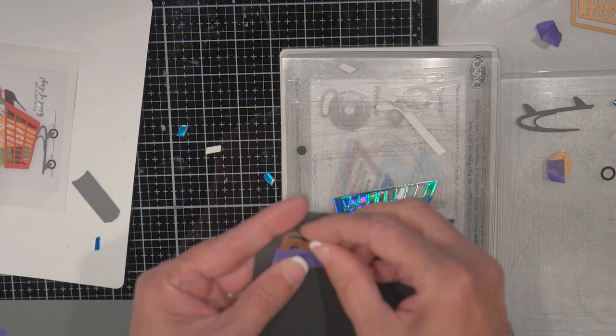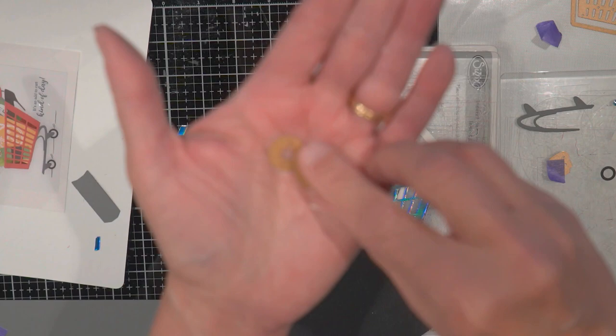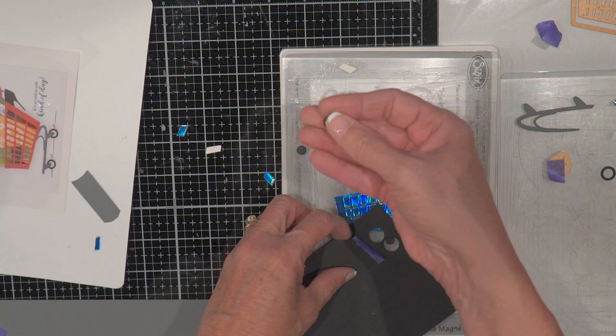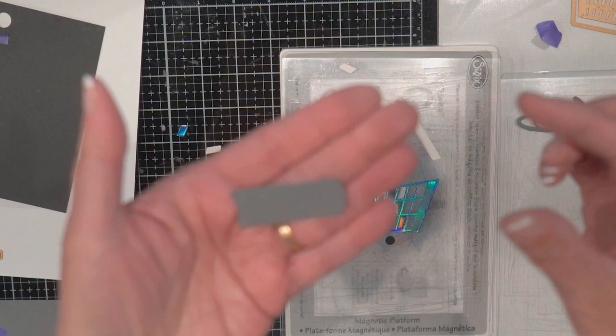They're really tiny. If they get stuck inside there, you can use a little pokey tool or simply drop them, and it'll fall out there.